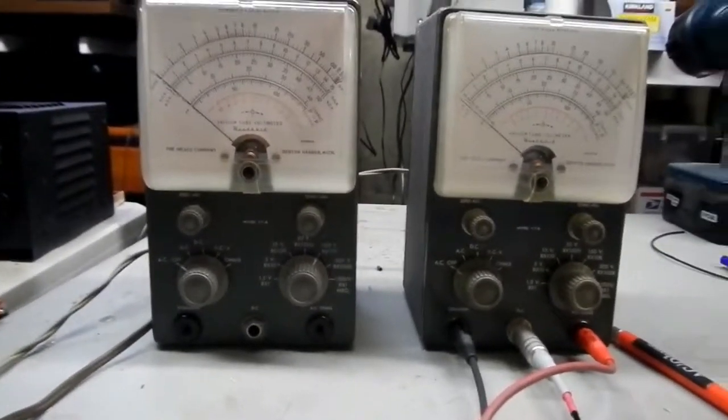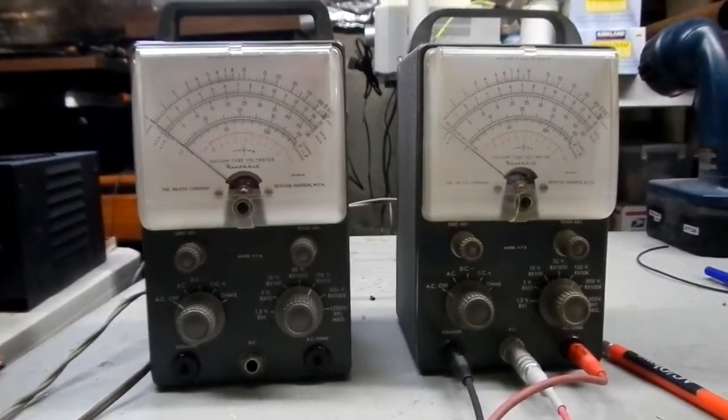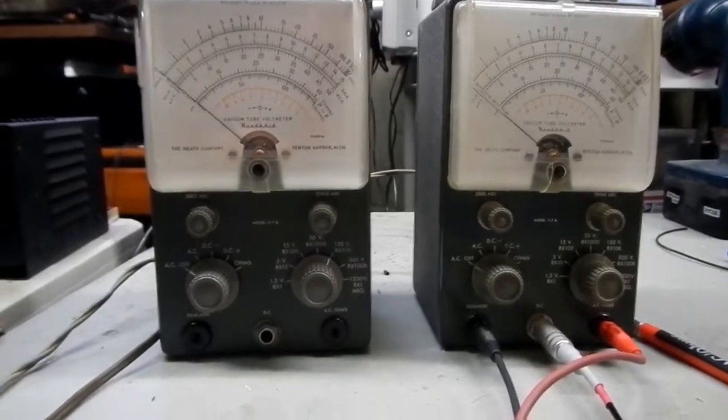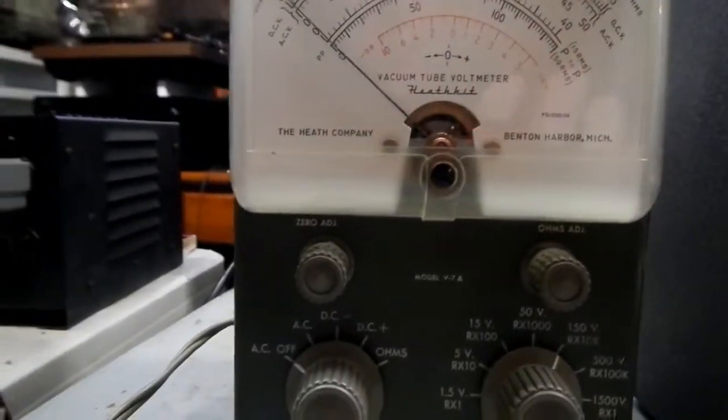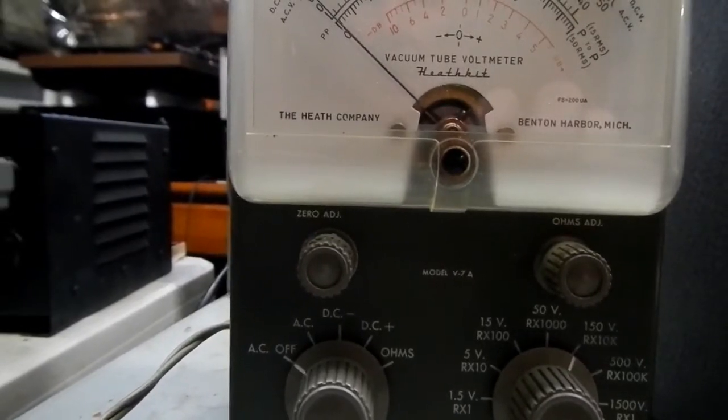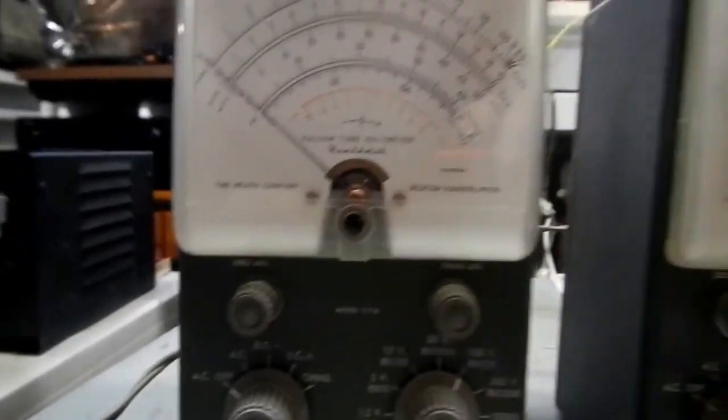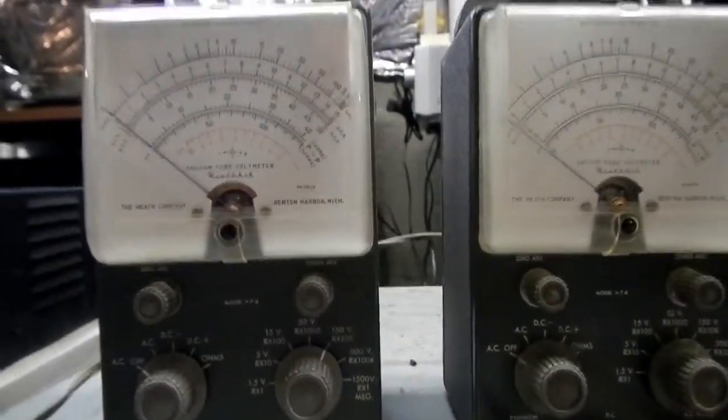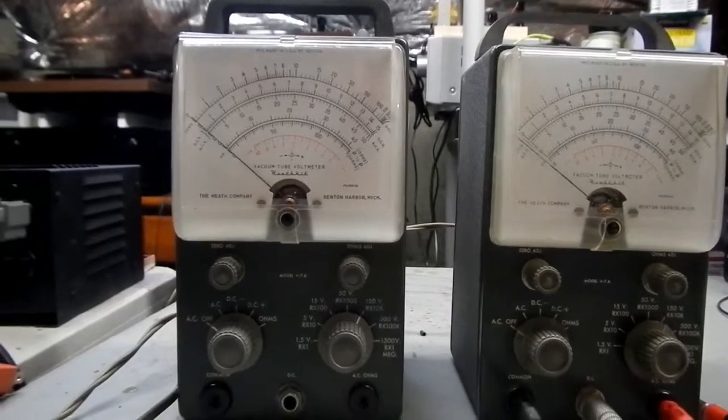Well, a mystery is solved on those what I was calling metal tubes inside of that new VTVM. I can kind of demonstrate it. By the way, these are Heathkit model V7A VTVMs which were made from 1956 through about 1962 as I remember.